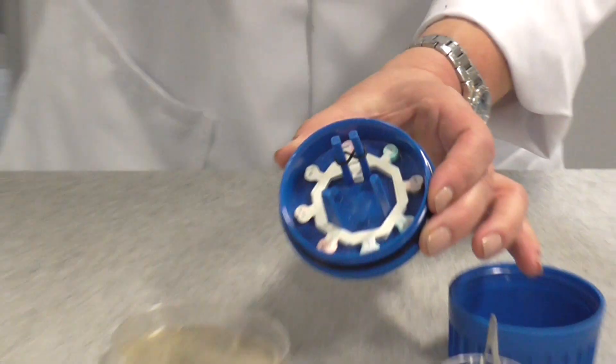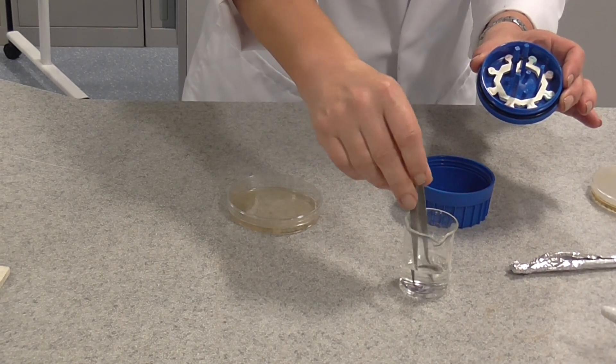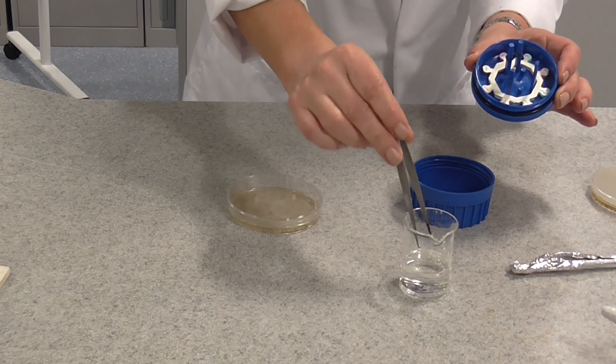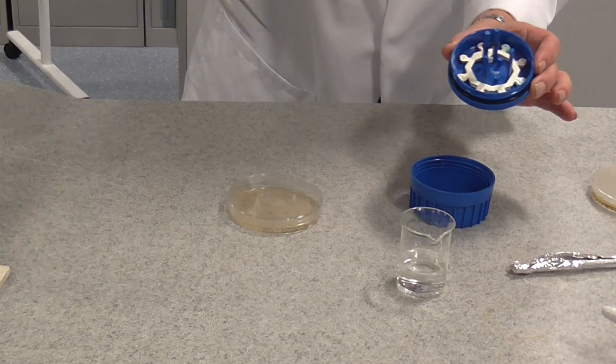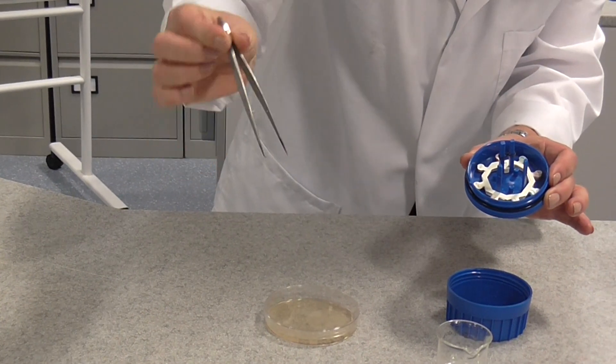Now I've got to use aseptic technique again to do this. So this time I'm going to use some forceps. They're in ethanol and I'm going to just flame them to sterilise them. So they've got some ethanol on them. Put those in your bunsen burner flame and you should see the ethanol there burning. And this will sterilise the forceps.